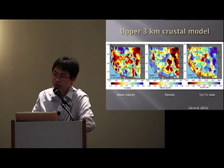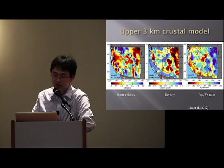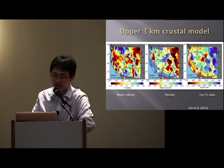We apply this inversion tool everywhere in the western US. In the top three kilometers, slow shear velocity can be observed in almost all the sedimentary basins. More interestingly, wherever we see this low velocity, we also see major light material — low density — as well as high Vp/Vs ratio. So now we can not only constrain shear velocity, but also constrain density and Vp/Vs ratio at the very shallow part of the earth.